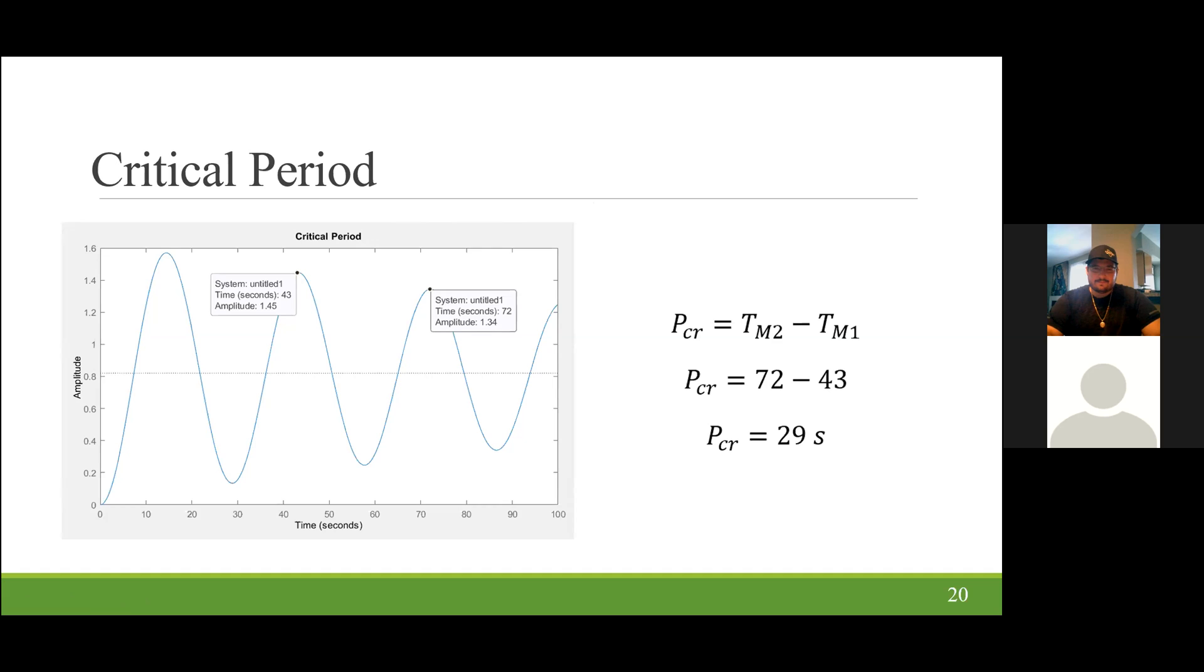So with following our critical gain, we need to solve for our critical period. This can be solved using the neutral stability function by plugging in the critical gain. This gives us a critical period of 29 seconds after you subtract the times from two of the magnitudes. So we have a critical period of 29 seconds.